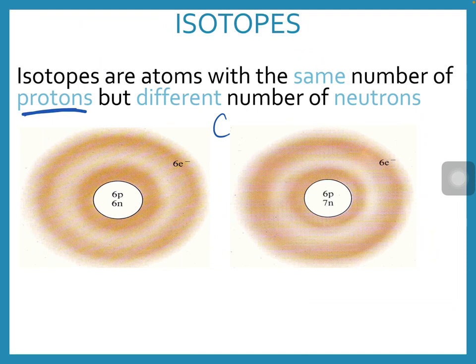In the first one, the nucleus has six protons and six neutrons, which means the mass overall is 12. In the second nucleus, I have six protons and seven neutrons, which means the mass is 13.